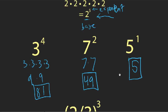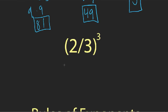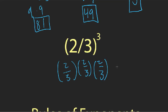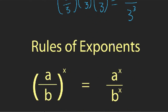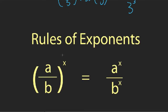Here's a slightly more complicated example: two-thirds to the third power. That's just two-thirds times two-thirds times two-thirds. Since we're multiplying a fraction, we can multiply the numerator and denominator separately, so this becomes two to the third power over three to the third power. This leads to your first rule of exponents: generally, if you have a fraction raised to a certain power, you can distribute that power to both the numerator and the denominator. This rule is useful in both directions.